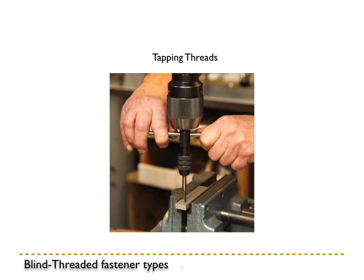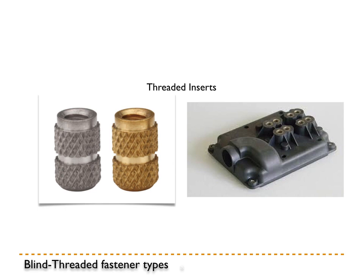In order to have threaded fasteners work, you have to tap threads or create threads in the material you are using, to allow the threads something to work on. Another option is threaded inserts — these are knurled and rough on the outside, but threaded on the inside. These are used in places like a piece of plastic, where the plastic itself isn't strong enough to support threads. When you insert these threaded inserts — in this case probably ultrasonically — it heats them slightly and allows them to bond to the plastic, giving you a nice hard surface for the threads to work against without having the entire object made from that material. So you can make things lighter, stronger, or use more appropriate materials where needed.